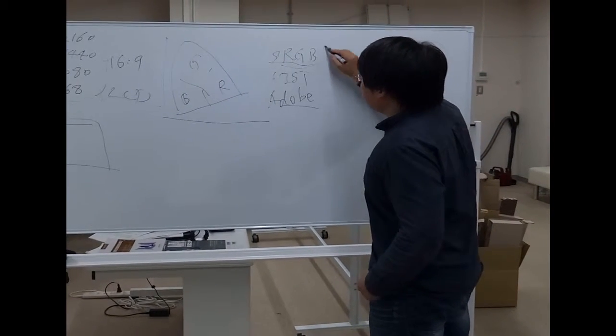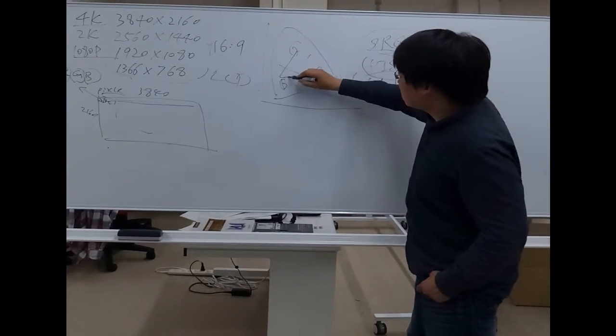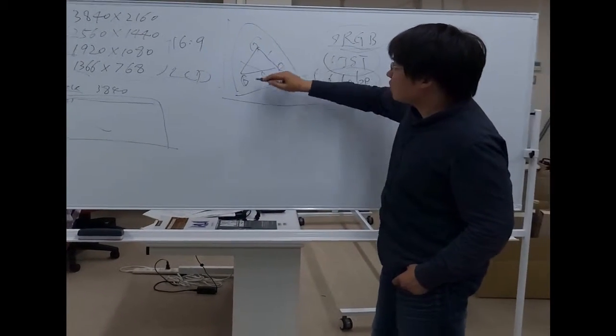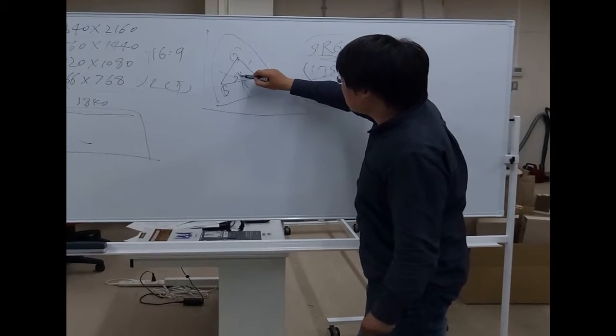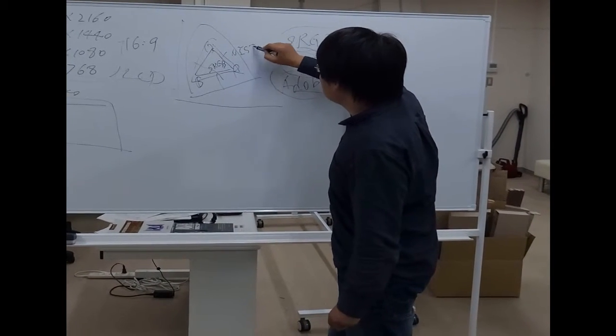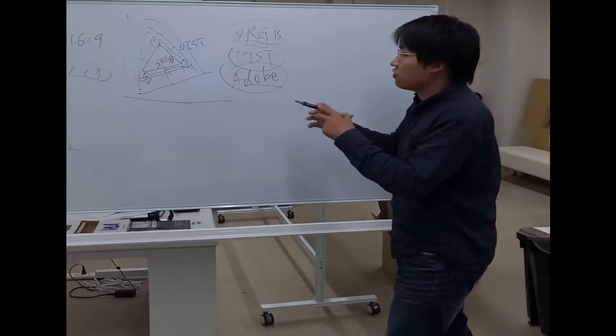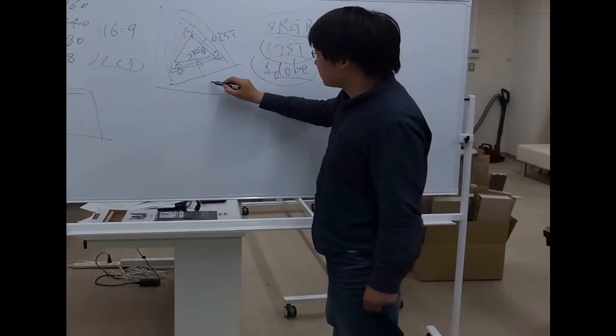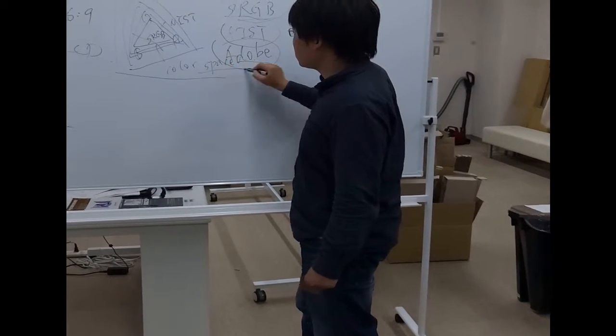So each system of standards has a different area of the color gamut. Maybe this is sRGB, that is small. And this is NTSC. Adobe RGB maybe has the most wide range of the color gamut, or color space.